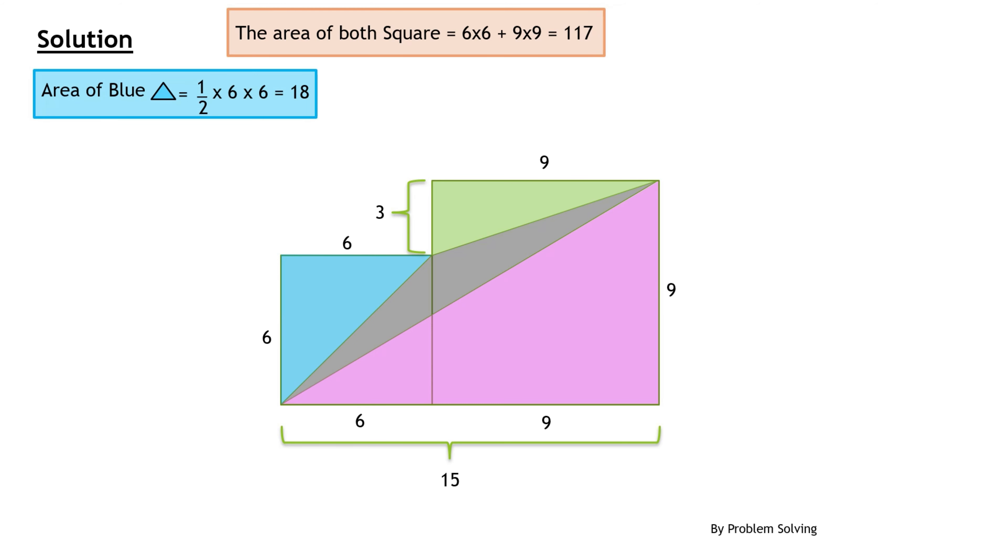The area of the blue triangle is half of 6 times 6 which is 18. The area of the green triangle is half of 3 times 9 which is 13.5, and the area of the pink triangle is half of 9 times 15 which is 67.5.